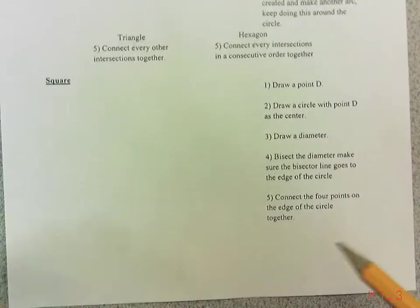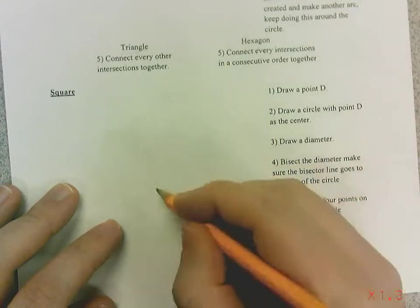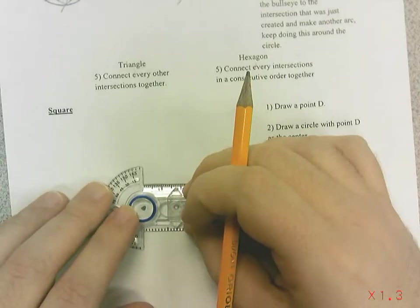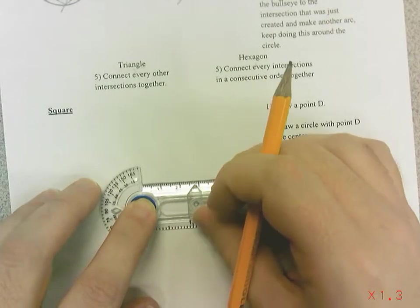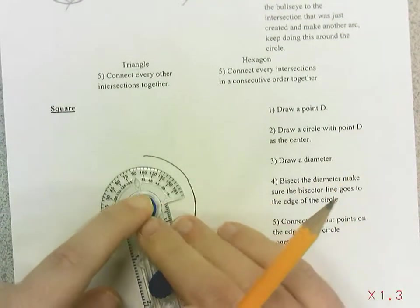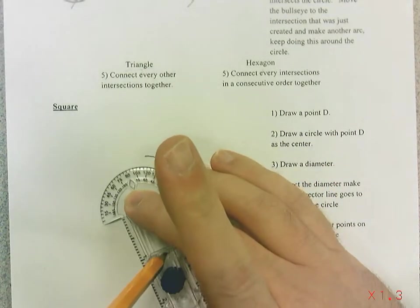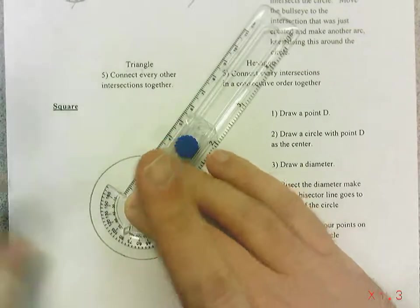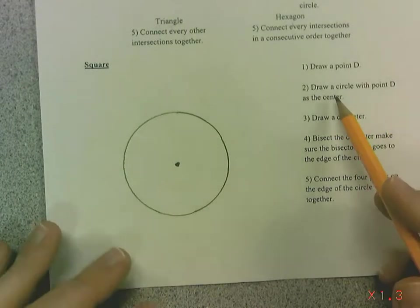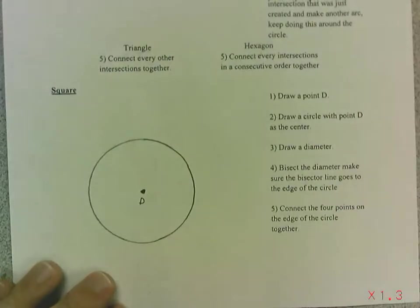The other shape that we can inscribe in a circle is the square. First thing we're going to do is draw a circle just like we did before. I don't need two examples on this section, so I can make the circle a little bit bigger. I drew a circle around the point and I'll label it point D — that's what the notes say.